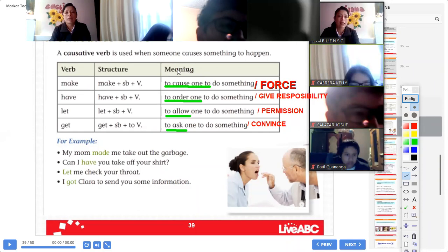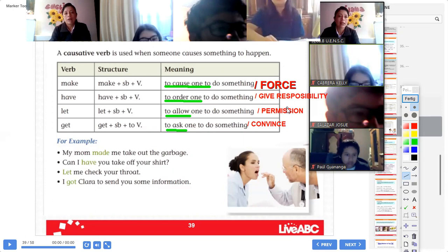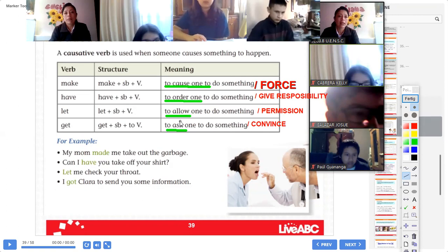Miss Ordoñez, have in causative verbs, what does it mean? Que pone orden, o responsabilidad. O dar responsabilidad. Poner orden, o dar responsabilidad. Mister Vallejos, let. Para pedir, hacer algo, o pedir permiso. Permitir. Darle permiso, en pocas palabras. Me permite revisarle. Mister Huananga, get. To ask and convince. Preguntar, pedir, o convencer a alguien de algo.